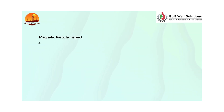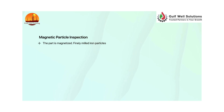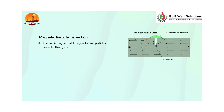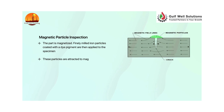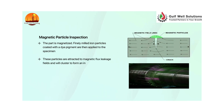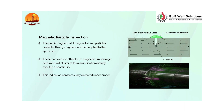In magnetic particle inspection, the part is magnetized. Finely milled iron particles coated with a dye pigment are then applied to the specimen. These particles are attracted to magnetic flux leakage fields and will cluster to form an indication directly over the discontinuity. This indication can be visually detected under proper lighting conditions.